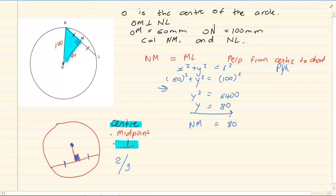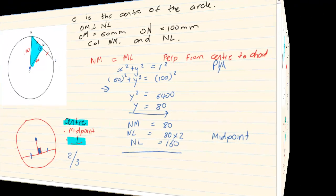Now, if NM is 80, then NL is going to equal 80 times 2. Again, why? Because it's the midpoint. Midpoint means they're exactly the same. It's halfway, so NL is equal to 160.